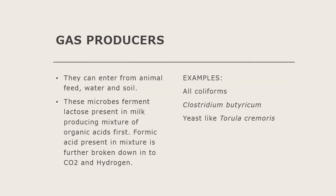The next type is gas producers. They can enter from animal feed, water, and soil. These microbes ferment lactose — the major carbohydrate present in milk — and produce a mixture of organic acids. The formic acid present in that mixture is further broken down into CO2 and hydrogen. So the gases produced are carbon dioxide and hydrogen. Examples are Clostridium butyricum, all coliforms, and yeast like Torula cremoris.